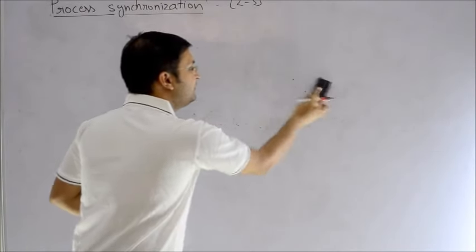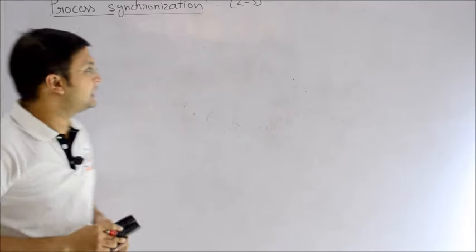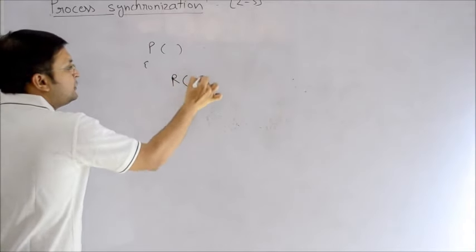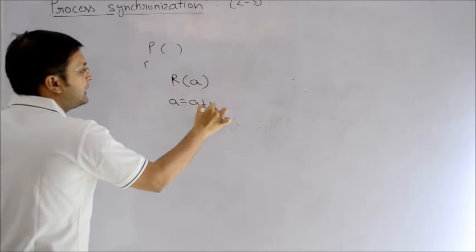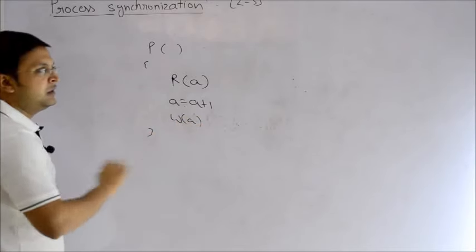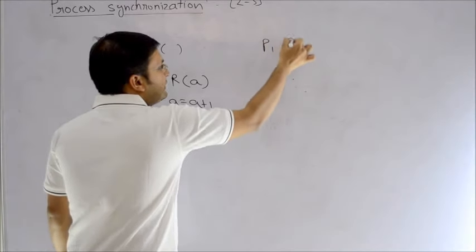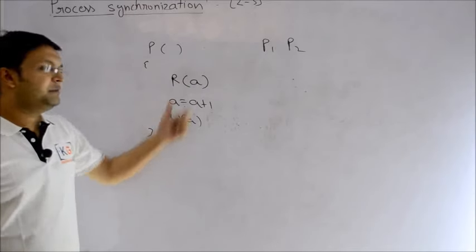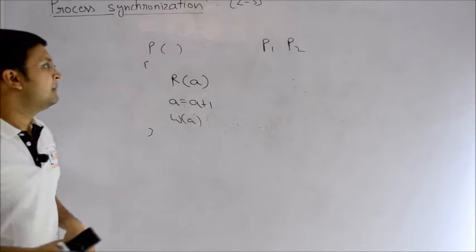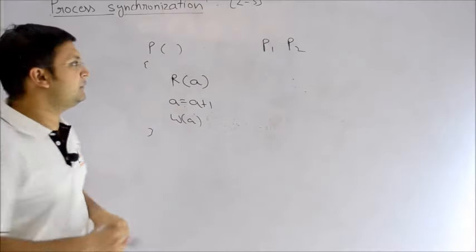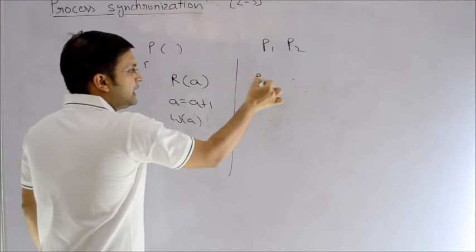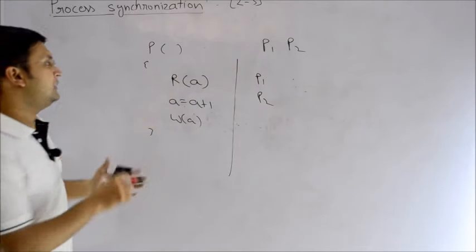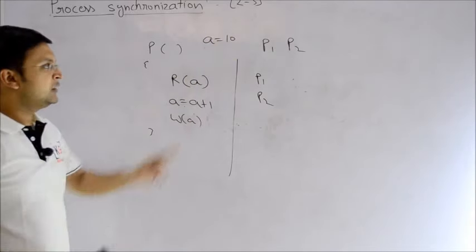Let me give an example of what could happen if different processes try to use the same resource at the same time. Consider a simple program with three instructions: read a variable A, increment the variable by one, then write the value. Suppose we have two processes P1 and P2. Variable A is a shared software resource accessible by both P1 and P2. Let's assume the initial value of A is 10.